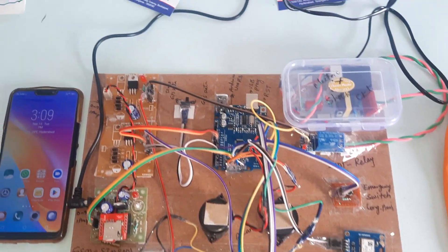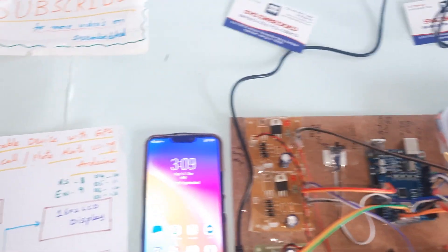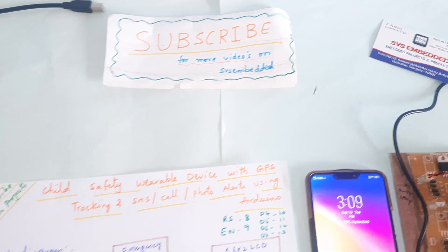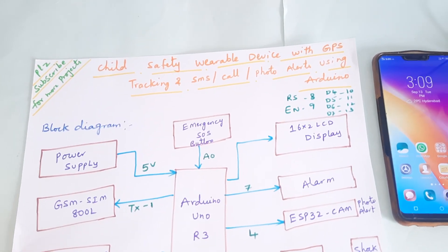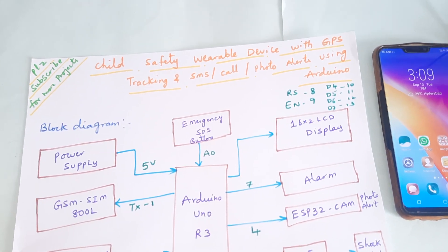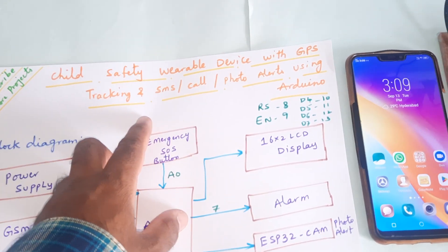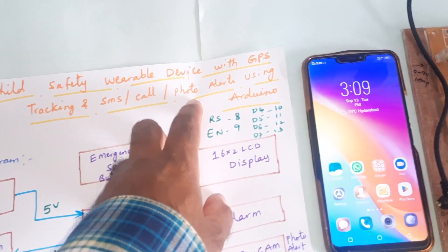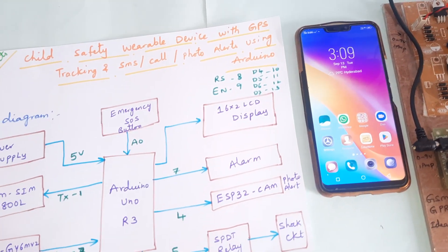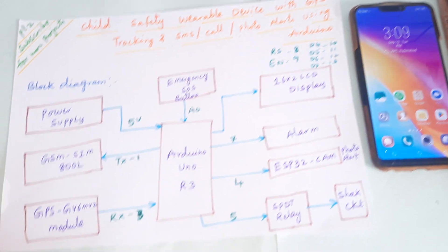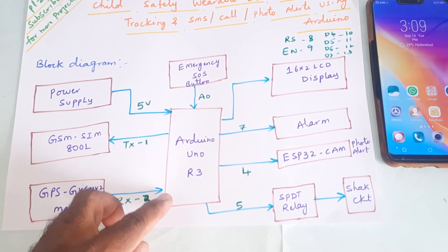Hi, we are from SVSM. The project title is Child Safety Wearable Device with GPS tracking, SMS alert, call alert, and Telegram photo alert using Arduino UNO R3.